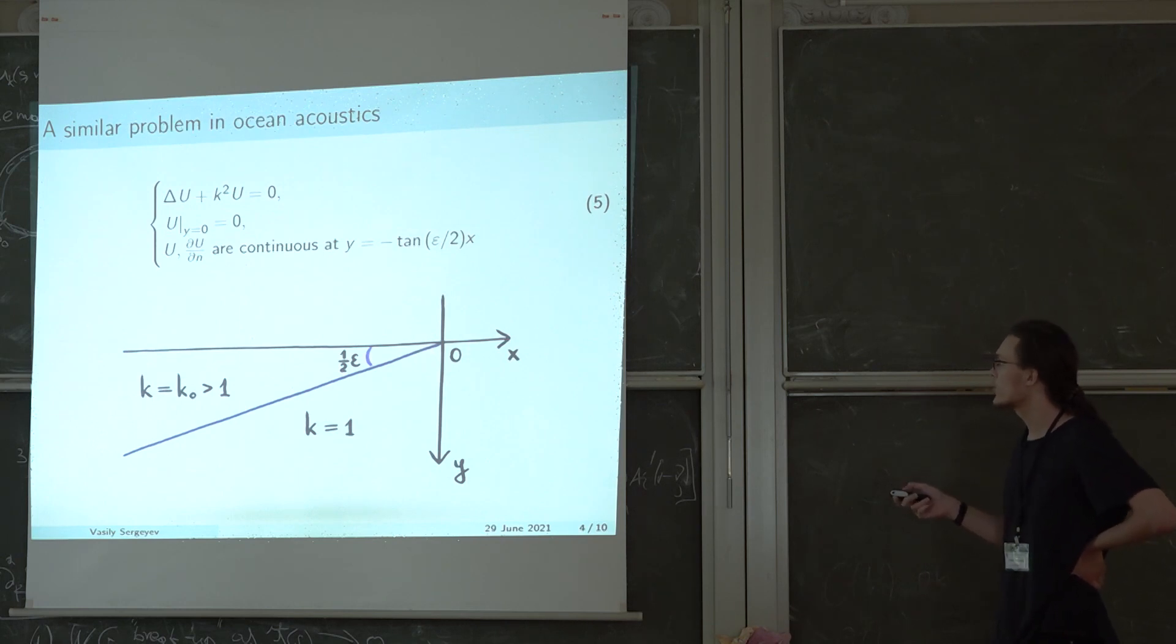I also want to mention that as the angle of the wedge tends to 0, this normal derivative becomes very close to the derivative along the vertical direction, which we require to be continuous implicitly in the quantum mechanical problem with the Schrodinger equation.